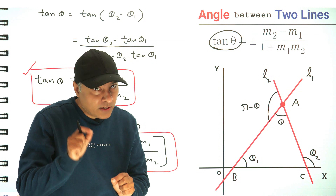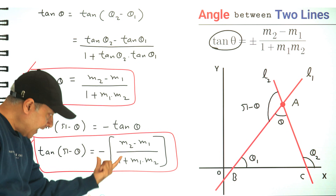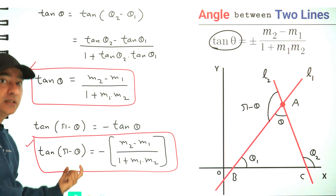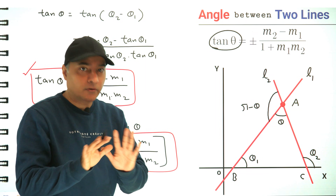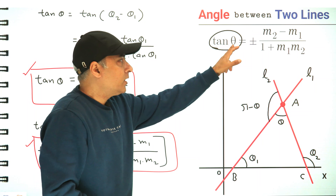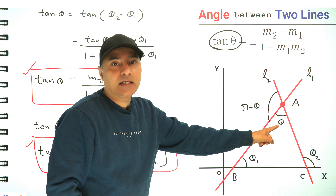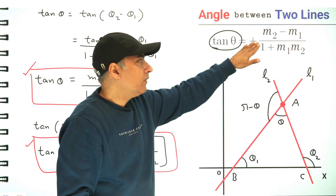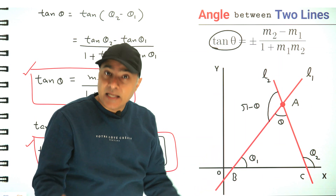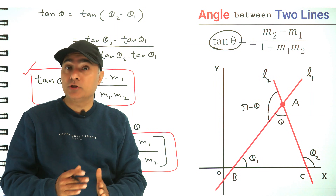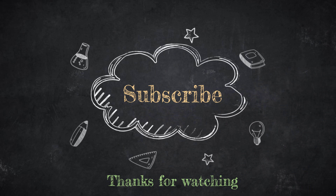Students often get confused: the positive value is tan theta and the negative value is tan(pi minus theta), so why do we write tan theta as plus minus this? There's no need to be confused — theta simply refers to one of these two angles. If we take the first angle as theta it comes with the plus sign, and if we take the other angle as theta it comes with the negative sign. I hope this derivation is clear. If you liked this tutorial, please share it with your friends and classmates. Thanks for watching.